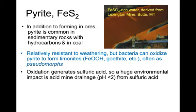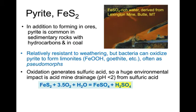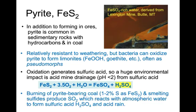Oxidation of pyrite generates sulfuric acid, producing a huge environmental impact — acid mine drainage of pH less than 2 derived from sulfuric acid. The sulfuric acid reaction starts with pyrite, FeS2: you add oxygen from the air and water from the environment, and it oxidizes the pyrite to make ferrous sulfate and H2SO4, which is sulfuric acid. Burning of pyrite-rich coal, which commonly contains 1 to 2% sulfur, and smelting of sulfides also produce SO2 gas, which goes into the atmosphere where water reacts with it to form sulfuric acid and consequently acid rain — a big problem for the northeastern U.S. and adjacent Canada.